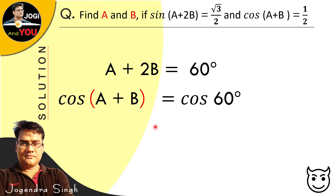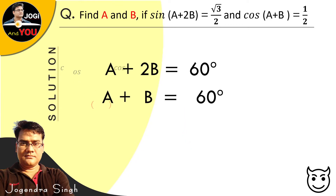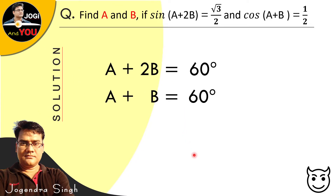These two can only be equal when a + b is equal to 60°. Otherwise, the equality symbol will not be satisfied. So, we can write this as a + b is equal to 60°.